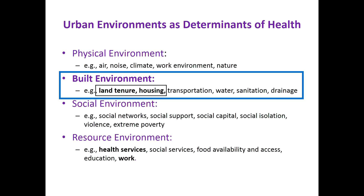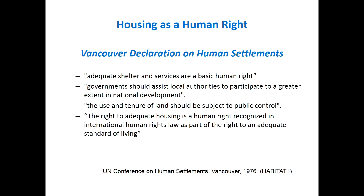In terms of the urban environment, I'm going to concentrate on the built environment and particularly the issue of land tenure and housing. In 1976, Habitat One occurred, and there was the Vancouver Declaration of Human Settlements. That talked about having adequate shelter and services as a basic human right. The government should assist local authorities, and use and tenure of land should be subject to public control. Housing as a human right.